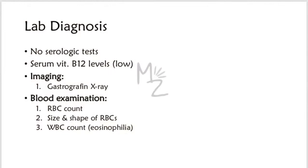Proglottidologic tests are also done. Serum vitamin B12 levels are measured and will be low due to the megaloblastic anemia. Imaging techniques like gastrographin X-ray examination are used. We also look at red blood cell count, size and shape of red blood cells, and white blood cell count — specifically eosinophilia, since eosinophils are elevated.